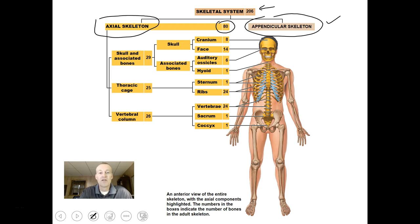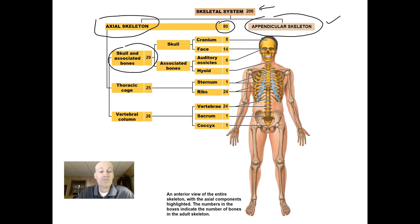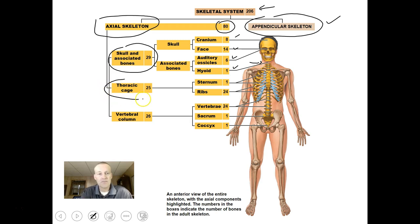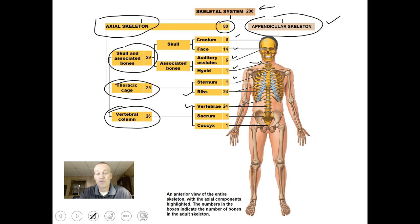The thoracic cage has around 25 bones: one sternum with three parts, and 24 individual ribs. The vertebral column has 26 bones: 24 vertebrae, one sacrum, and one coccyx or tailbone. We'll go through and talk about each of these different parts.